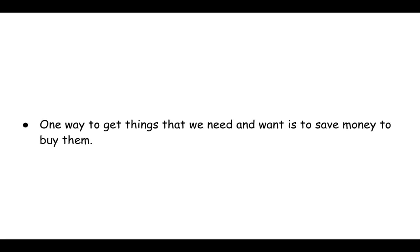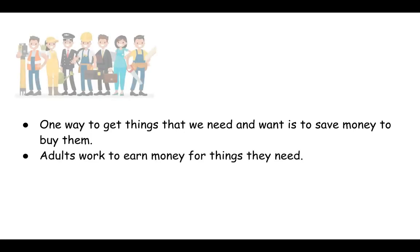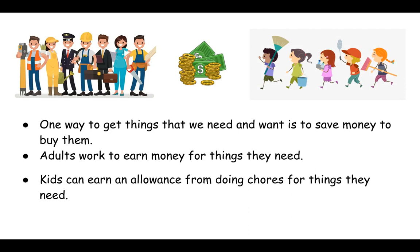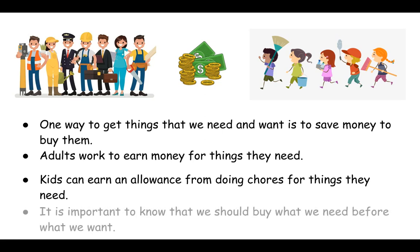One way to get things that we need and want is to save money to buy them. Adults work to earn money for the things they need, and kids can earn an allowance from doing chores for the things that they need. It is important to know that we should buy what we need before what we want, because what we need is going to help us survive.